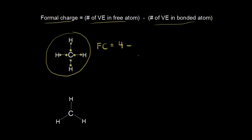From that, we subtract the number of valence electrons that carbon actually has in the drawing. Remember when we drew our dot structures, each bond came from one valence electron from hydrogen and one valence electron from carbon. So we divide up all of our bonds that way — one valence electron to hydrogen and the other to carbon. Carbon has four valence electrons in our drawing: one, two, three, four. So four minus four equals zero — carbon has a formal charge of zero in methane.